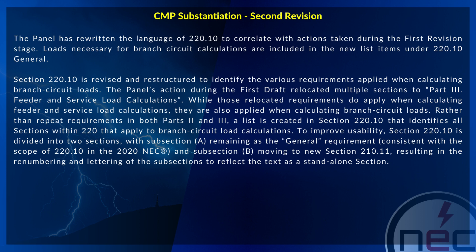To improve usability, section 220.10 is divided into two sections, with subsection A remaining as the general requirement, consistent with the scope of 220.10 in the 2020 National Electrical Code, and subsection B moving to new section 210.11, resulting in the renumbering and lettering of the subsections to reflect the text as a standalone section.